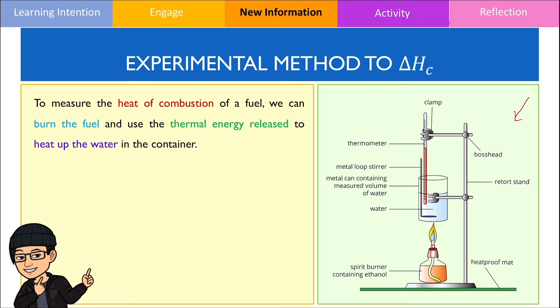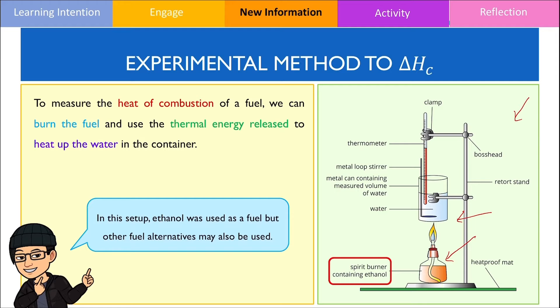To find the heat of combustion, we burn the fuel which is contained inside of the spirit burner and the heat energy released from this combustion reaction is used to heat up the water held inside of this container. In this setup, ethanol is used as a fuel but other fuel alternatives such as butane or methanol could also be used as well.